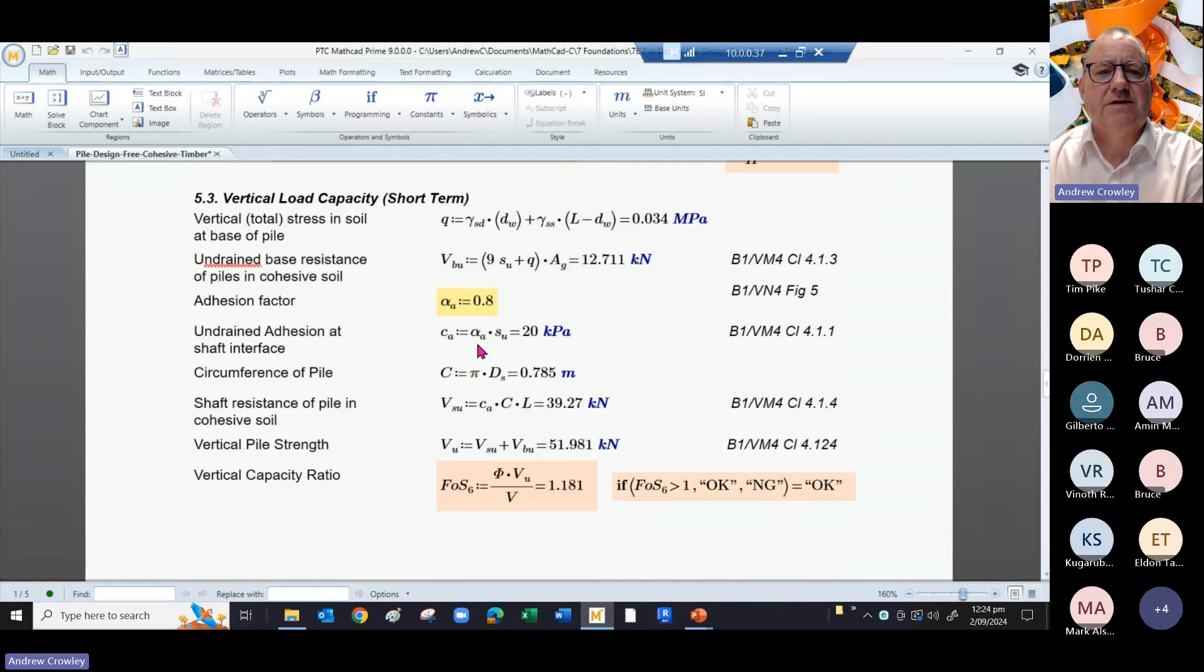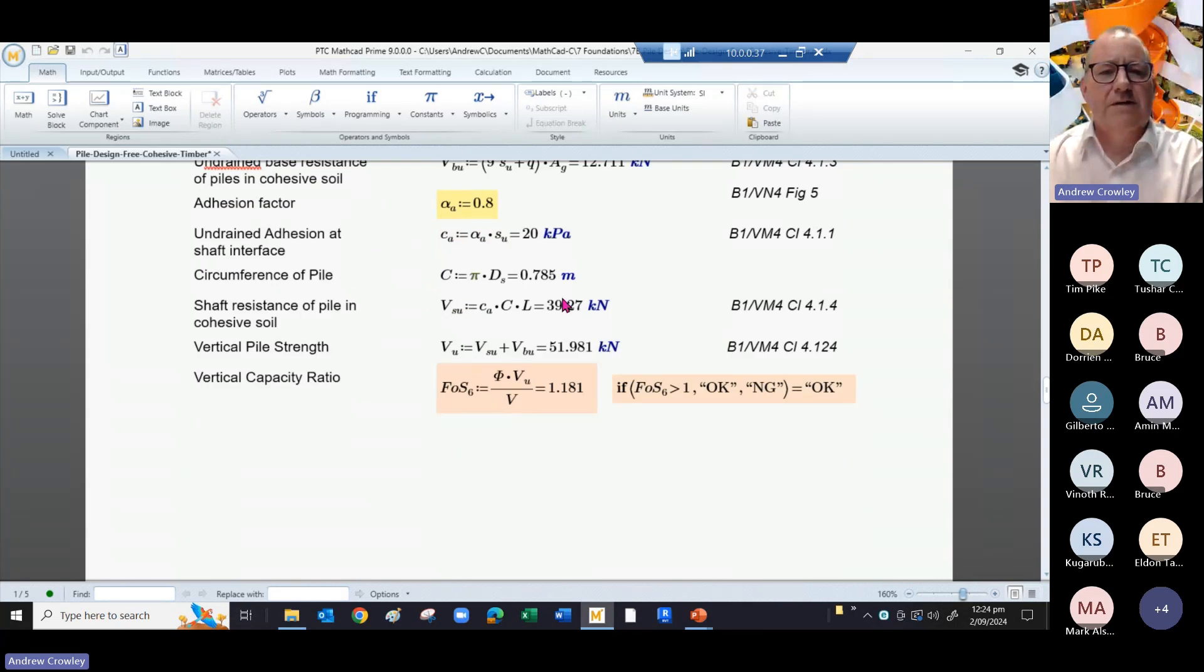That's applied around the circumference of the pile, which gives us a shaft resistance of 39 kilonewtons.